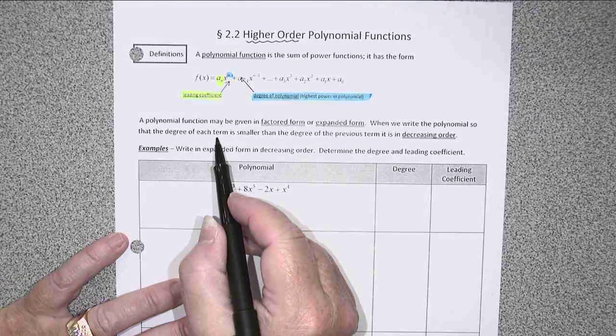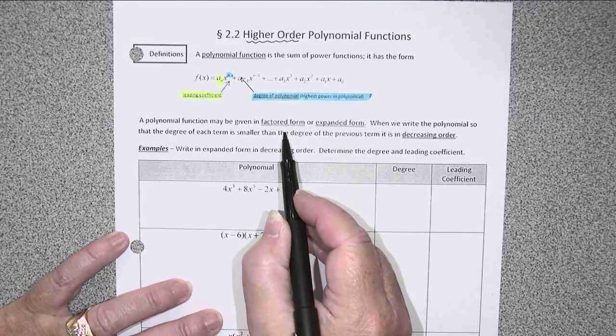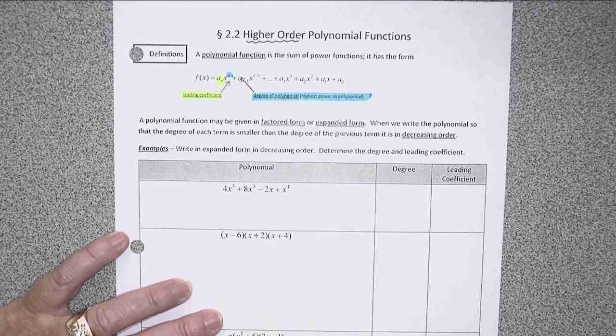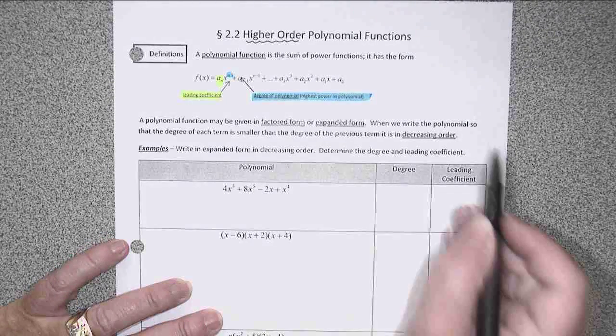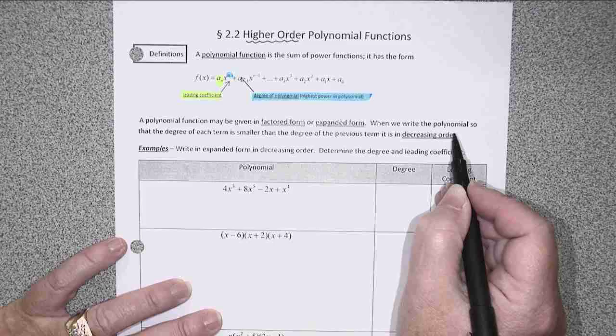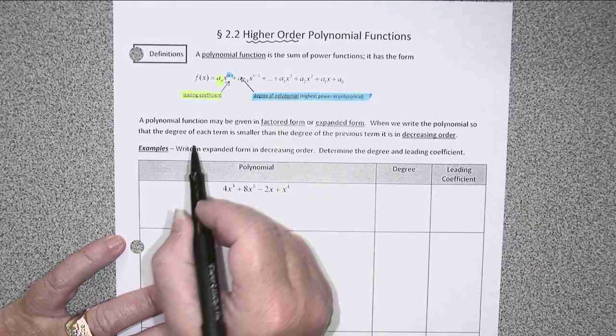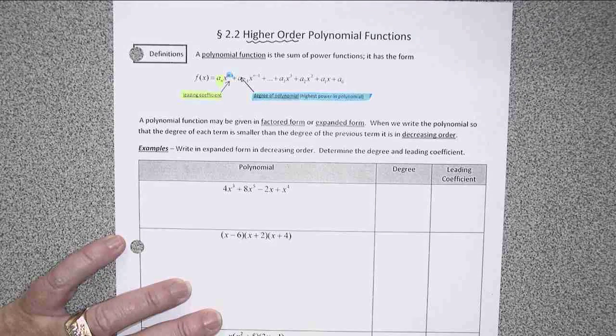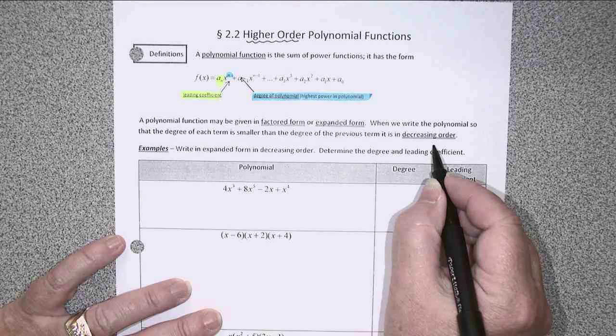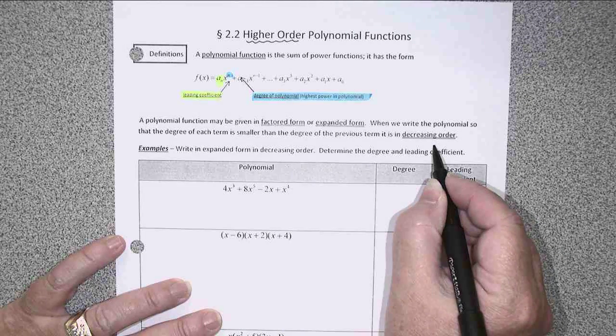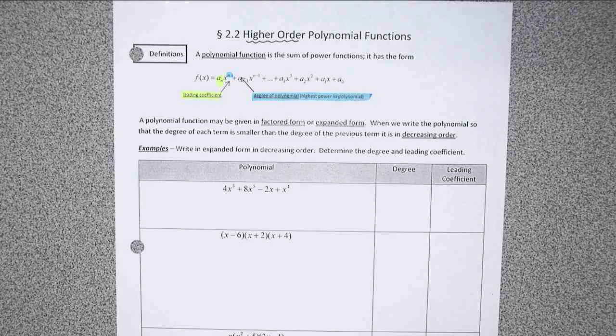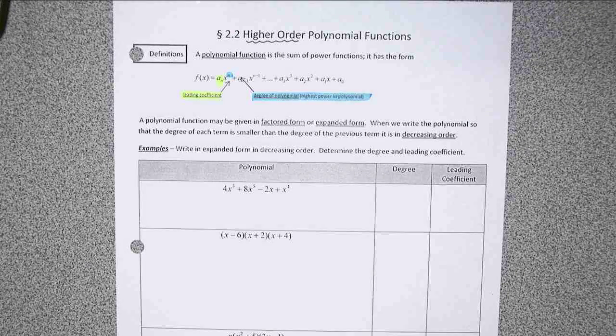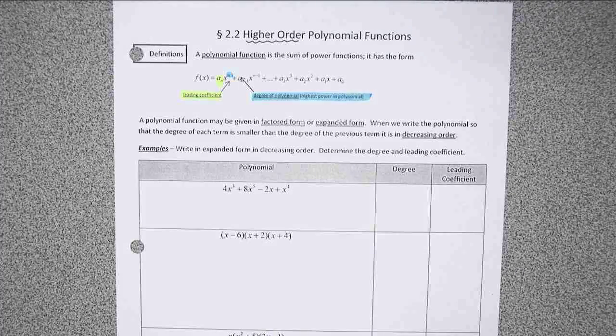When we write our polynomial functions, they can be in either factored or expanded form, and in this section we are going to discuss how to go back and forth between those. When we write our polynomial in expanded form in such a way that the degree of each term is smaller than the degree of the previous one, we say that it's written in decreasing order. Let's take the polynomials in the chart here and expand them if necessary, then write them in decreasing order.